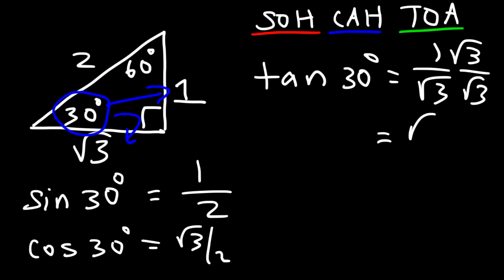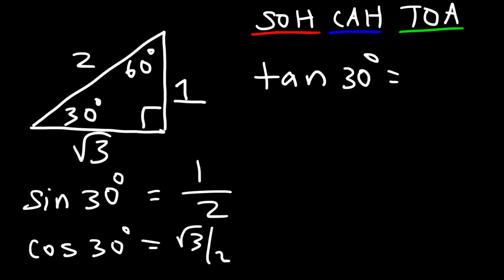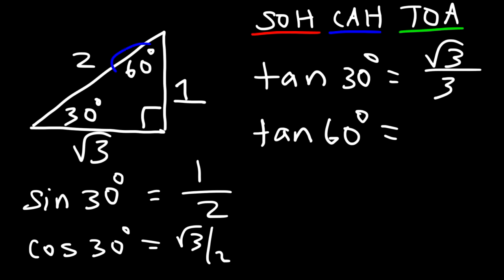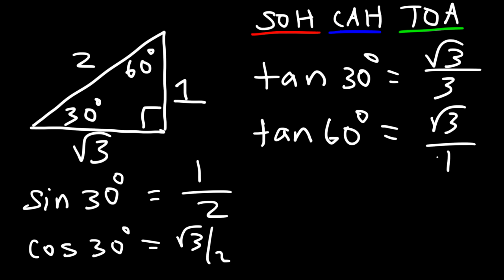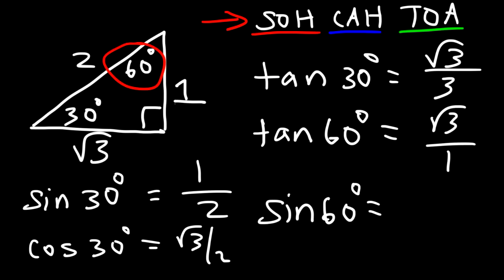That's how we evaluate tangent 30 using the 30-60-90 right triangle. For tangent of 60, we focus on the 60-degree angle: opposite is root 3 and adjacent is 1, so tangent 60 is root 3 over 1, which is simply root 3. For sine of 60, opposite over hypotenuse gives the square root of 3 over 2.